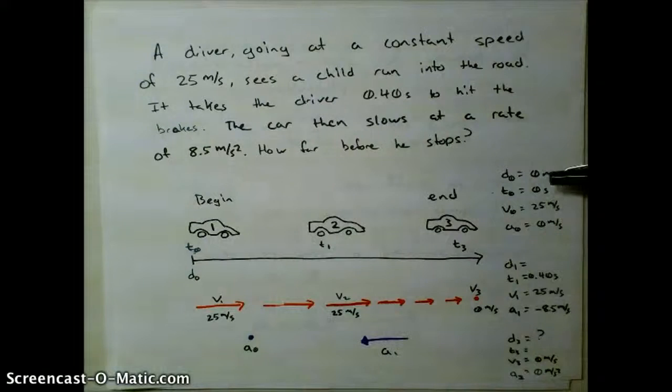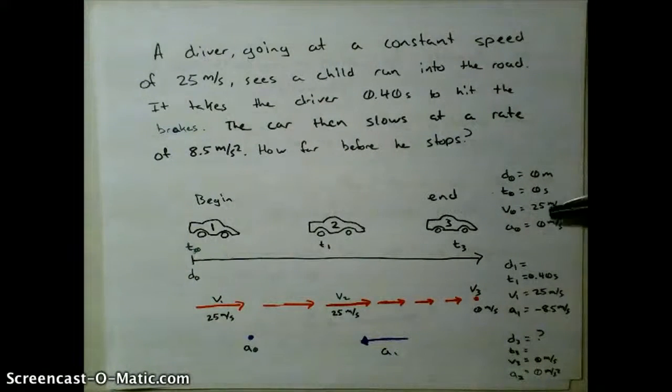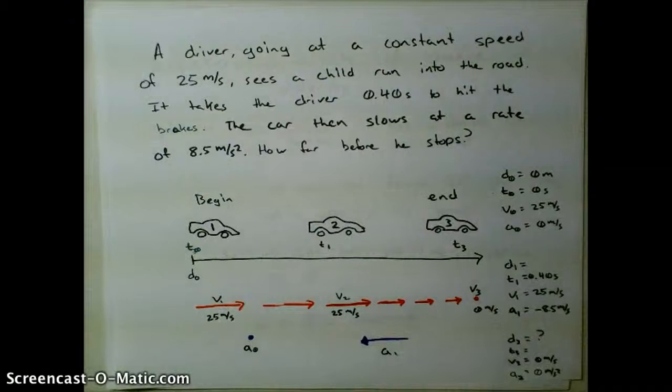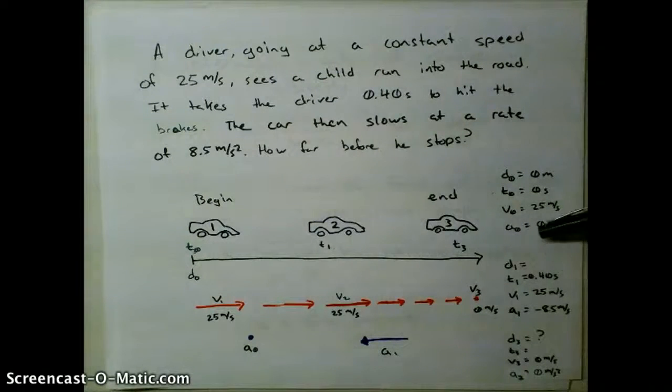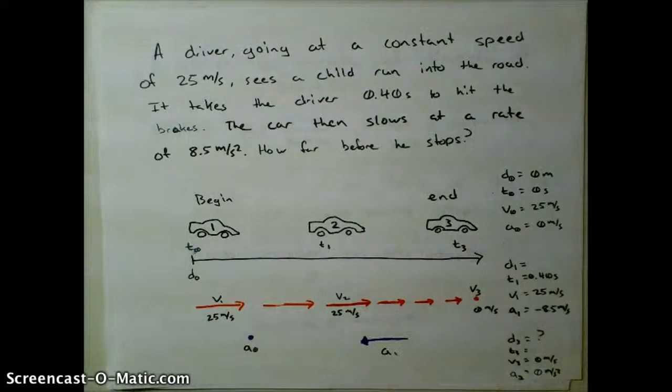We know that when he sees the child, we're going to set that as our distance zero. That'll also be our time zero. We know at that time that he's going at a constant speed of 25 meters per second. And since he's moving at a constant speed, we have no acceleration. So we can actually see acceleration is just a dot at time zero because he's not accelerating at all. Our velocity is constant.